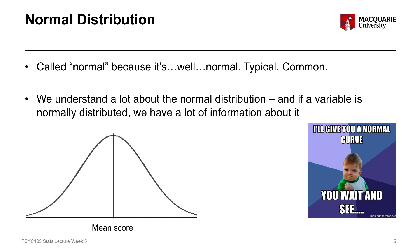What I mean is: if a variable is normally distributed, the majority of scores are around the mean in the middle — the mean being the average score. There are fewer scores down the left-hand side, which is the bottom tail, and fewer scores up the right-hand side, which is the top tail. The extreme scores at the very left or right are unlikely or uncommon. This means we can get a really good sense of how likely any particular score is to occur, and how different it is from the other scores.